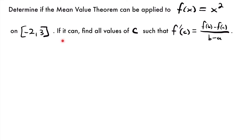And if we can apply the mean value theorem, we're going to find all values of c such that the derivative at that point c is equal to the slope between our two endpoints of our interval. In order to apply the mean value theorem, we first need to check if our function is continuous and differentiable on our interval.